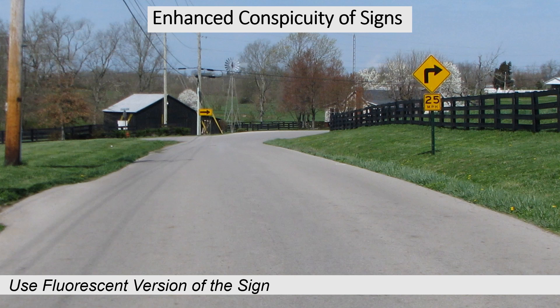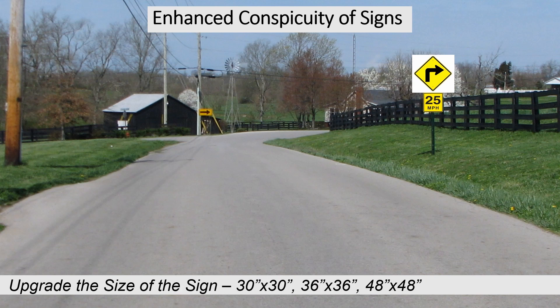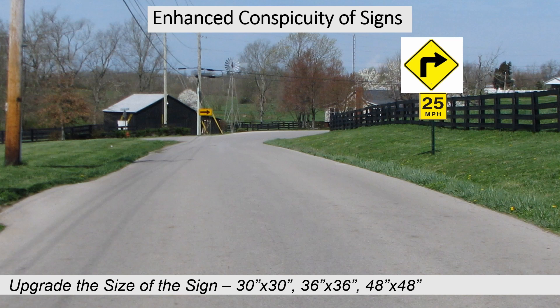You could use a fluorescent version of this sign. Upgrading curve signs to fluorescent sheeting will reduce crashes by 18% for some crash types. You could also upgrade the size of the sign. For example, the minimum warning sign for a conventional road is 30 inches by 30 inches. You could upgrade to 36 by 36 inch or a 48 by 48 inch sign.